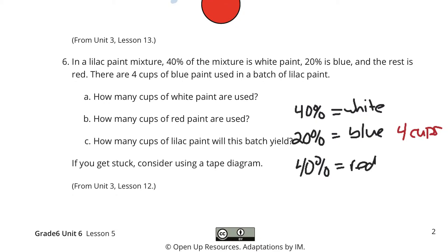And so, if 20% is blue, we can double that to get eight cups for the white, because 20 times two is 40, which means then there's eight cups of the red. So, how much paint is yielded here? Eight plus four plus eight is 16 cups total for that 100% yield.